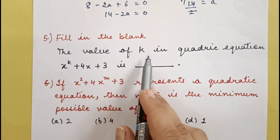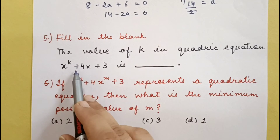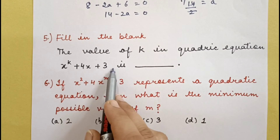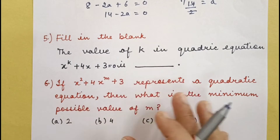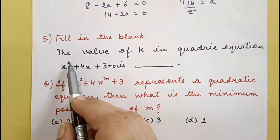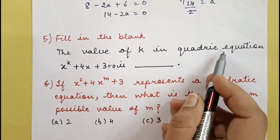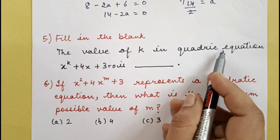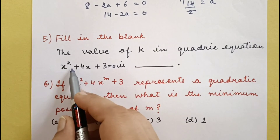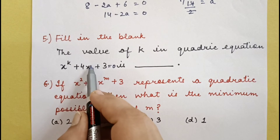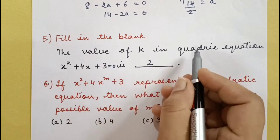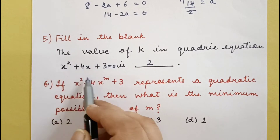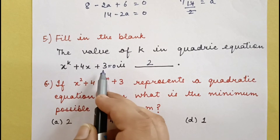Question 5 — fill in the blank: the value of k in equation x^k + 4x + 3. Here k is the power of x. Since this is a quadratic equation, x must have maximum power 2. So k = 2. If k = 1, it would be a linear equation.